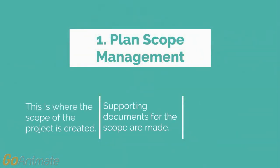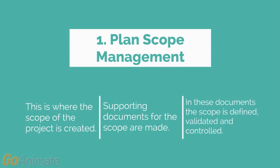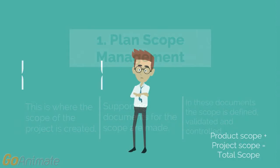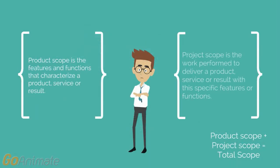The first point is plan scope management. This is where the scope of the project is created and supporting documents for the project are made. With these documents, the scope is defined, validated, and controlled. Product scope is the features and functions that characterize a product, service, or result. The project scope is the work performed to deliver a product, service, or result with those specific features or functions. The product scope and the project scope together form a total scope.